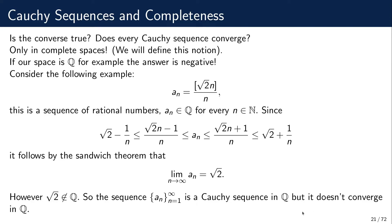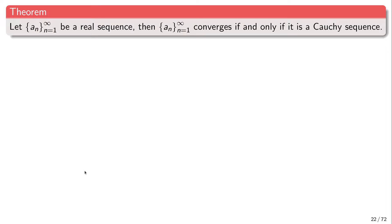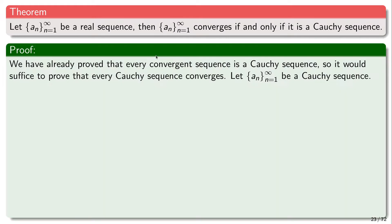So now let's prove that unlike the rational numbers, which are incomplete, the real numbers are complete. And in fact, every Cauchy sequence of real numbers actually converges. We have already proved that every convergent sequence must be a Cauchy sequence. So now it remains to prove the harder direction: that every Cauchy sequence of real numbers actually converges to a limit, to a real number.